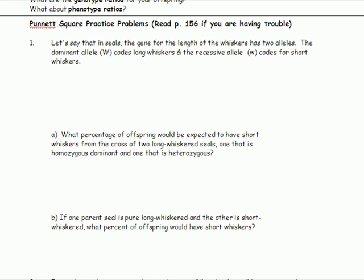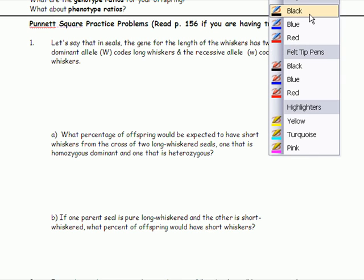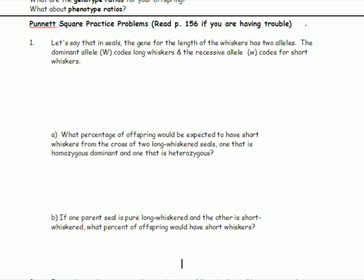So let's say that in seals — I actually like seals — the gene for the length of whiskers has two alleles. The dominant allele, W, codes for long whiskers. Every time you see these problems, write stuff down. W equals long whiskers.